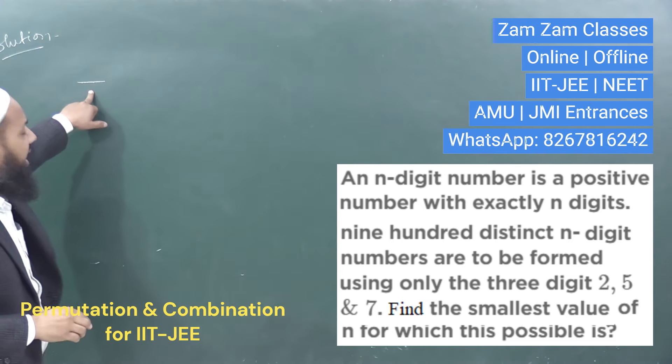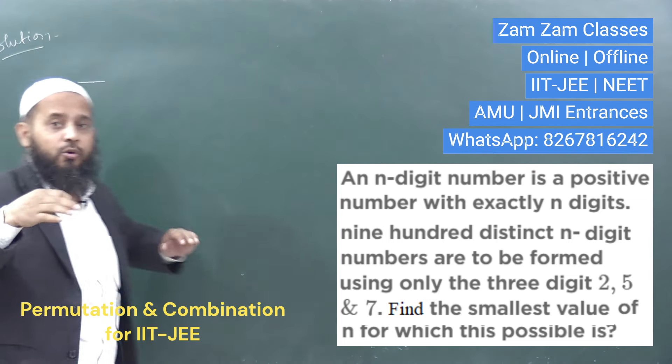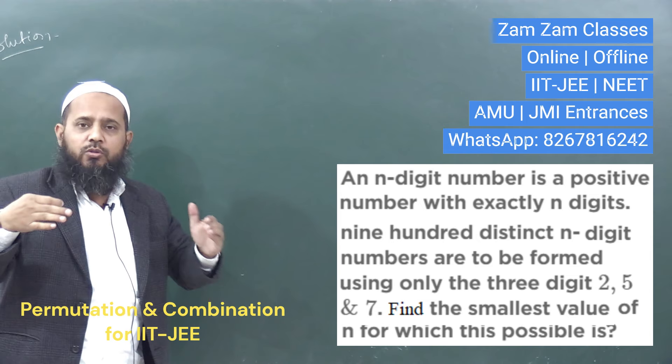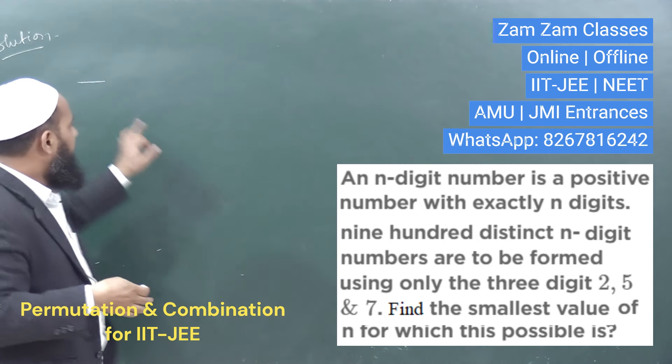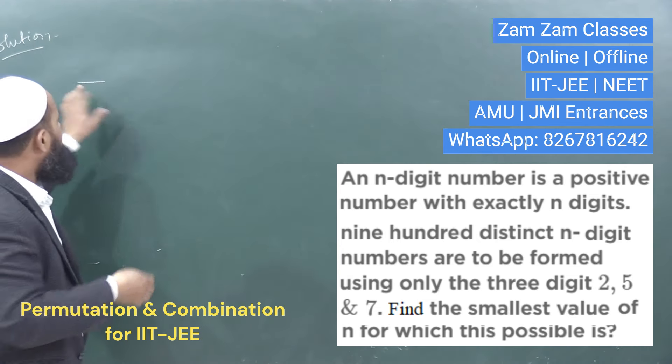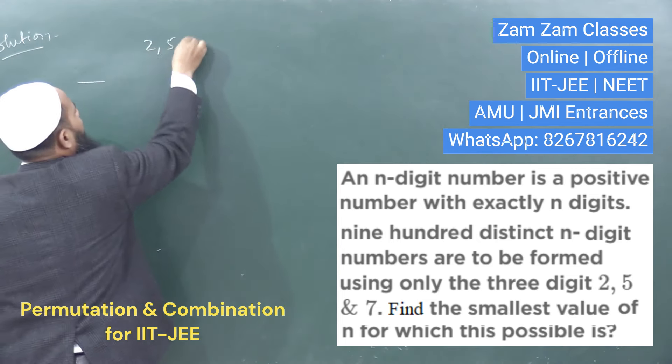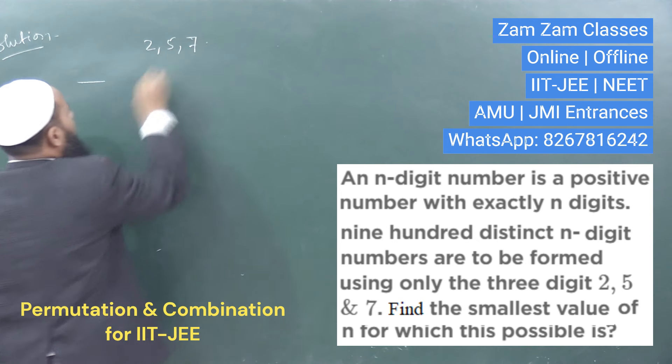For example, if n is equal to 1, then how many numbers are going to be formed? The digit options are 2, 5, and 7.